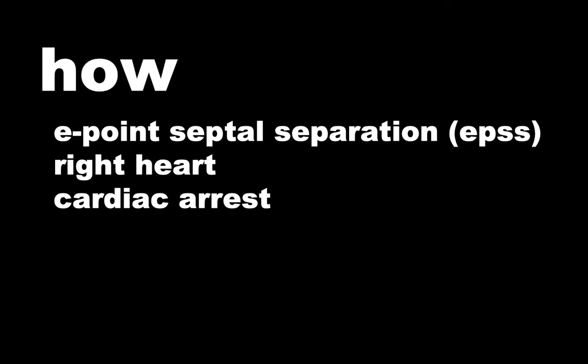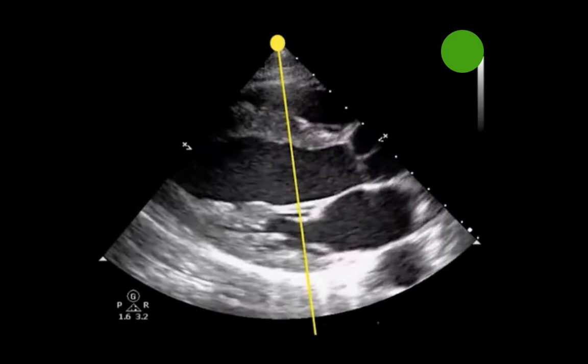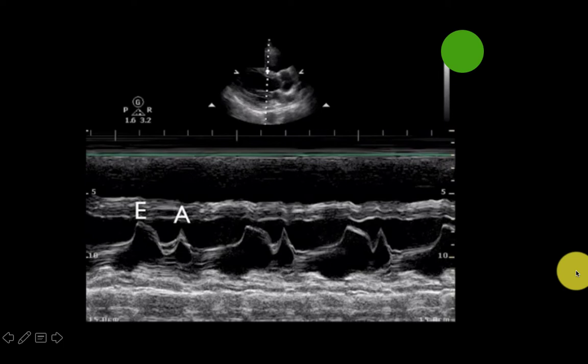So first, we're going to talk about the EPSS. What is the EPSS? This stands for the E-point septal separation. To obtain this, you first want to start by obtaining a parasternal long view. You're then going to use the M-mode tool and drop that line through the anterior tip of the mitral valve, and it'll spit out an image that looks like this.